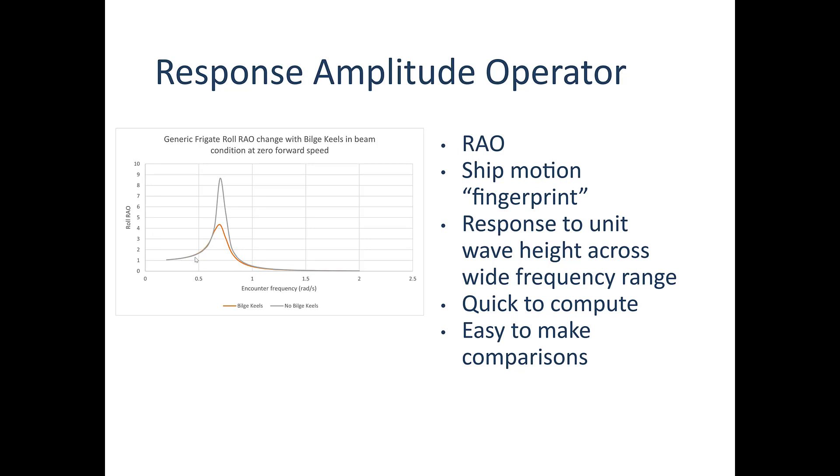How would you use this? Well, it's good to know what it is just by itself, but it's also a really great way to make a comparison. I've got an example here with the generic frigate with bilge keels and without bilge keels, and you can see that there's a really big damping effect you get from having those bilge keels on there. Really demonstrates how much reduction in roll there is by having those bilge keels on there. It's really quick to compute the RAO, even across a wide range of forward speed and wave conditions. And it's really easy to make comparisons like this to little features like bilge keels and so on.